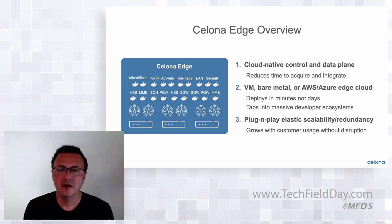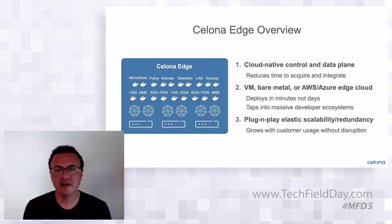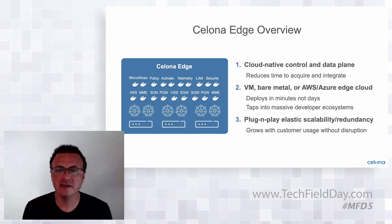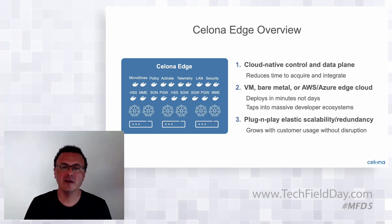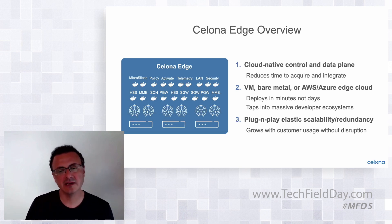So if a process dies on a specific hardware for any reason, we can spin another instance of that process immediately. That's the stateless operation. And then we went beyond the standard CUPS architecture in 3GPP.